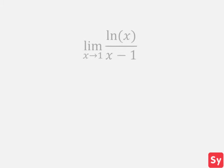Let's try an example. The limit as x approaches 1 of ln of x over x minus 1. We'll try substitution, and we'll get 0 over 0, which is an indeterminate.